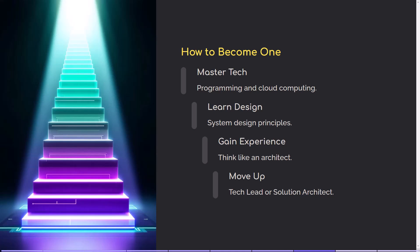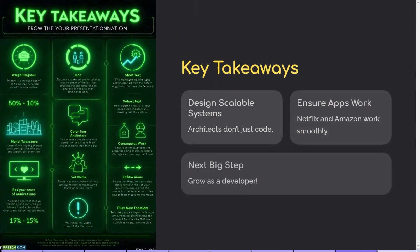Three: get hands-on experience — start thinking like an architect in your projects. Even if you're just a developer now, ask yourself how would I design this for scale? Four: move into architecture roles — look for roles like solution architect, tech lead, or enterprise architect to build leadership skills. Five: stay curious and keep learning. Technology evolves fast, and the best architects stay ahead by always learning.